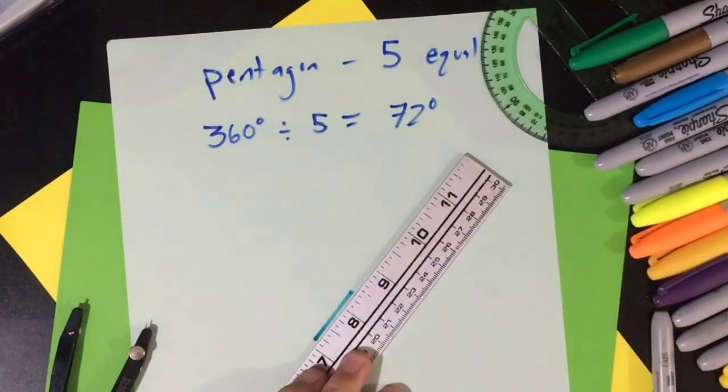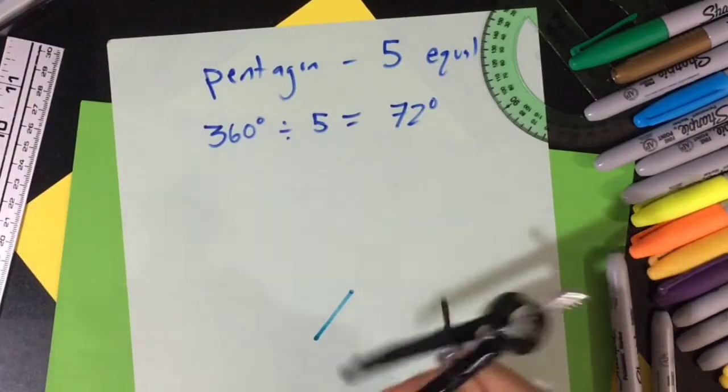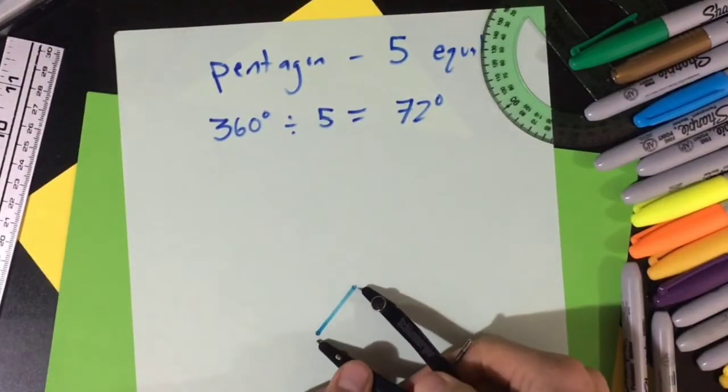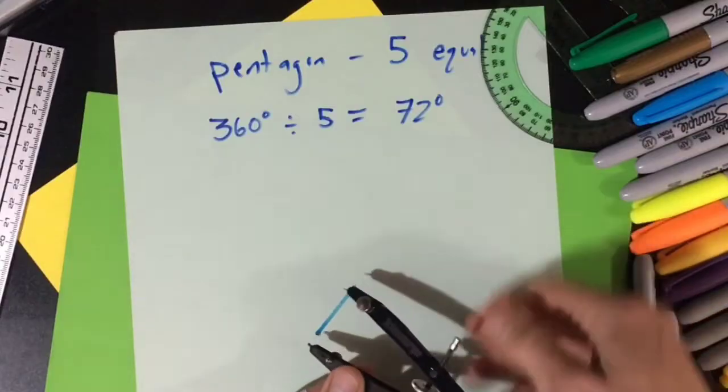So first you are going to draw a line that will be the inner part of your circle. Choose one point to be the center of your circle, and then you draw a circle around that point.